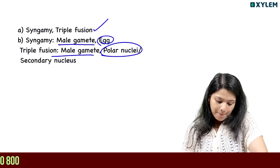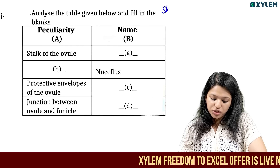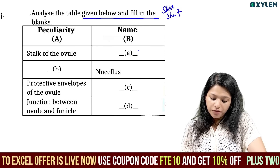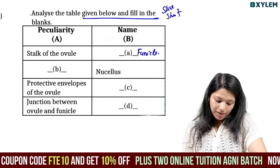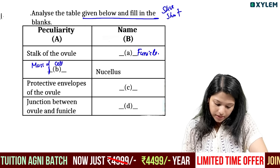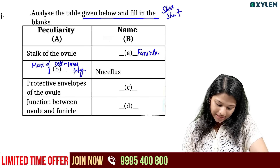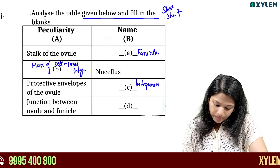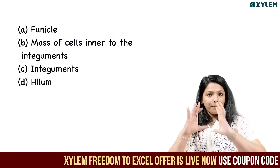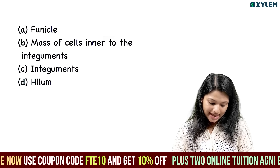Double fertilization is the most important question in this section. Analyze the table given below and fill in the blanks. The stalk of the ovule is called the funicle. The inner integuments form a mass of cells. The protective envelope of the ovule is called the integument. The junction between the ovule and the funicle is called the hilum.